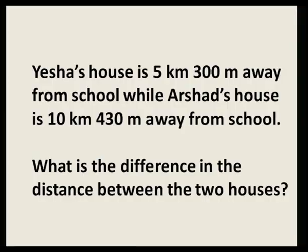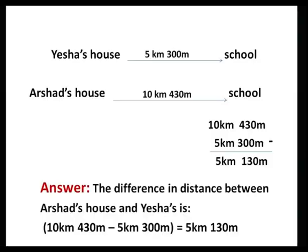Now we shall proceed with some word problems involving length. The first example: Yesha's house is 5 kilometers 300 meters away from school, while Arsad's house is 10 kilometers 430 meters away from school. What house is more distant and by how much? To find the difference, we perform subtraction: 10 km 430 m minus 5 km 300 m equals 5 kilometers 130 meters. So Arsad's house is more distant by 5 kilometers 130 meters.